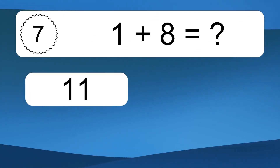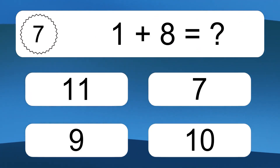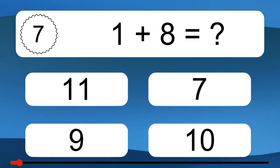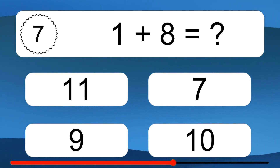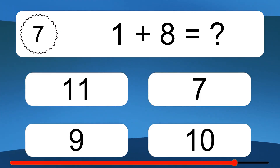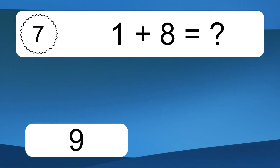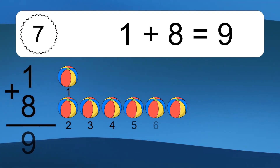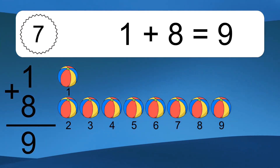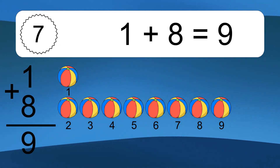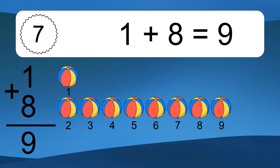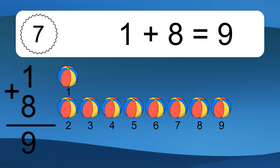1 plus 8 equals what? 1 plus 8 equals 9. Let's count it: 1, 2, 3, 4, 5, 6, 7, 8, 9.